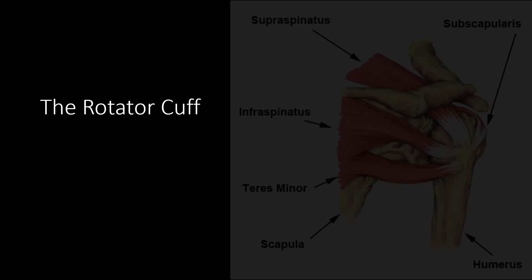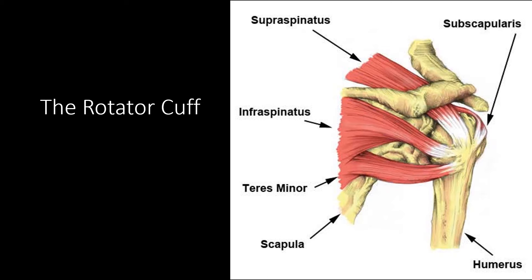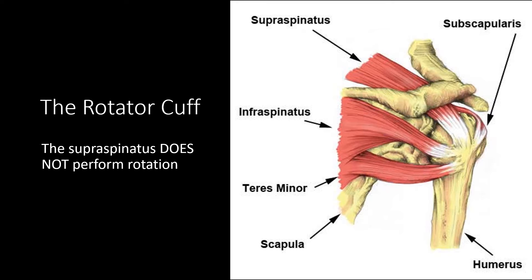Moving on to the rotator cuff — before looking at the model, this picture is helpful in understanding it. There are four muscles in the rotator cuff: the supraspinatus, infraspinatus, teres minor, and subscapularis. The supraspinatus doesn't actually perform any rotation — it's just doing abduction. However, it's part of the rotator cuff because those four muscles together form a cuff around the head of the humerus, and it assists the rotating muscles by supporting the humerus and helping it stay in joint.